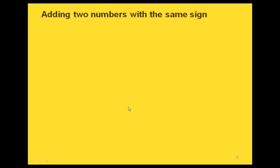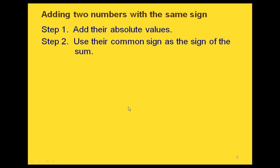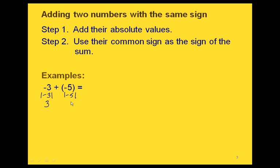Let's look at adding two numbers with the same sign a different way. Another way we can think about this is to find the absolute values of each of the numbers and add those together. Once we've done that, the sign that the two numbers had in common is the sign of our answer. So here are some examples. If we're trying to add negative 3 and negative 5, the absolute value of negative 3 is positive 3, and the absolute value of negative 5 is positive 5. If we add those two absolute values together, we get 8. Now for step 2, we have 8, but the sign of our answer is the sign that these two original values had in common, which was a negative sign. So our final answer is going to be negative 8.